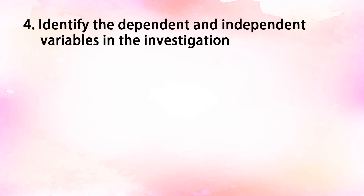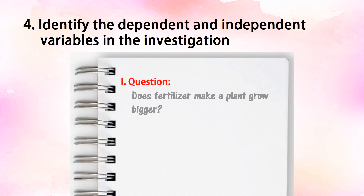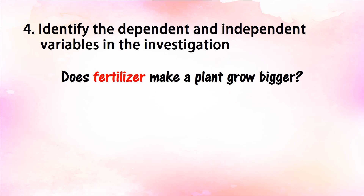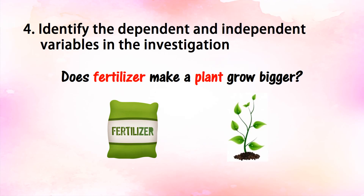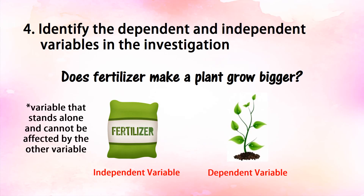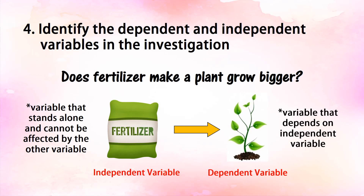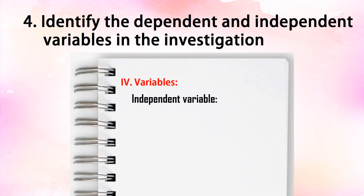The number four component is to identify the dependent and independent variables in the investigation. From the problem question — does fertilizer make a plant grow bigger? — the two variables are fertilizer and plant growth. The independent variable is fertilizer, while the dependent variable is plant growth. Fertilizer is the independent variable because it stands alone and cannot be affected by the other variable. Plant growth is the dependent variable because it depends on the independent variable.